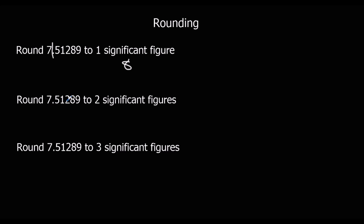So to two significant figures, again we start counting from the first non-zero number — that's 1, 2. That's two significant figures. Now we're looking at this number. Is it 5 or above? No, it's not. So it's not going to round it up to 7.6. It's going to stay at 7.5.